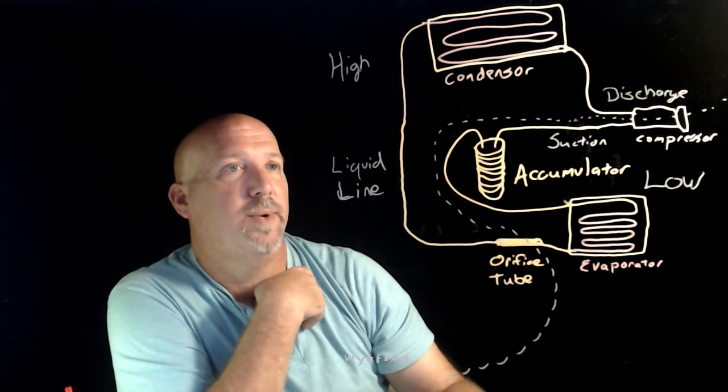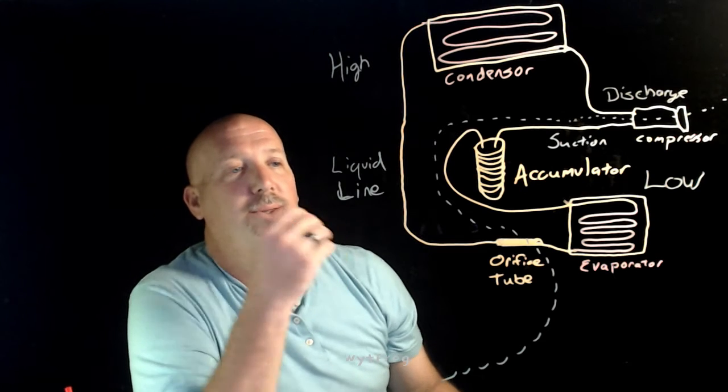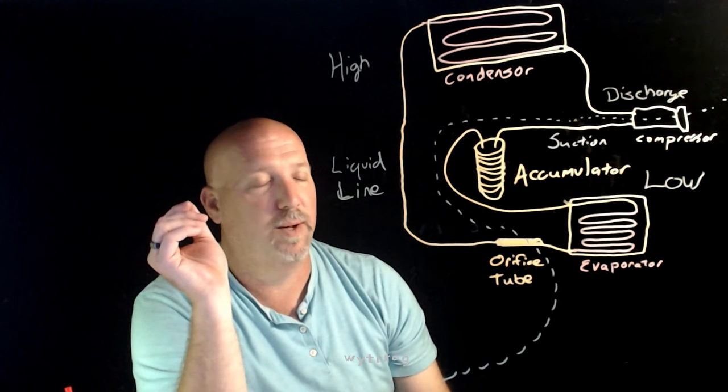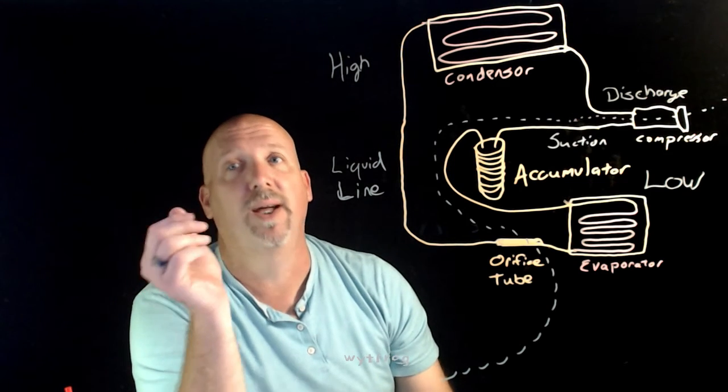On this type of system, we have an accumulator and an orifice tube. On the orifice tube setup, the refrigerant cycle is the same, it's just the locations for the components are a little different.